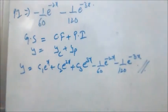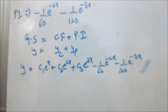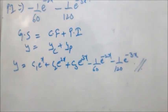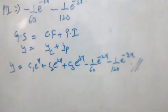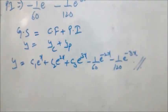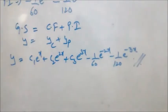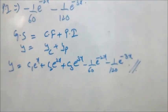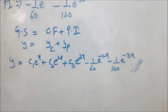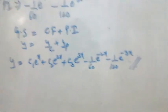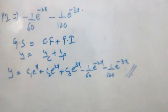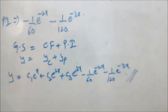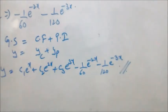This is the first rule — when X is in the form e^(ax). First we find the complementary function by finding the m values from the auxiliary equation, then write the CF. After that we find the PI, and combine them to get the general solution. If you have any doubts, please ask in the comments. If you found the procedure clear, like and subscribe. Thank you.